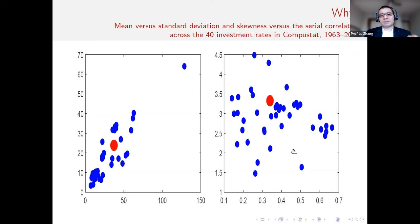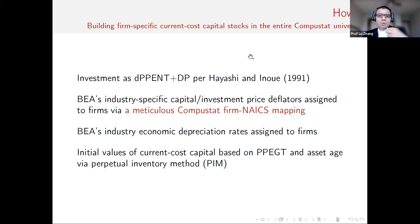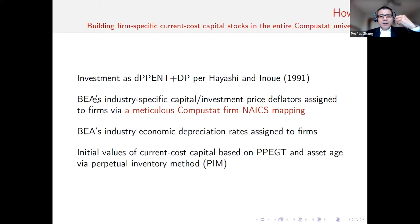We're going to try to clean up this mess. The two larger red dots are our measurement of current cost investment rate. The main data work is to construct firm-specific current cost capital stocks for the entire CompuStat universe. We're going to post all the data online so people can use it in their own work. We're going to measure investment as change in PP&E plus depreciation, following the Hayashi paper and Inu, working with the Bureau of Economic Analysis's industry-specific price deflators. We developed a meticulous CompuStat firm-to-NAICS industry mapping — a step that alone took five months of work.